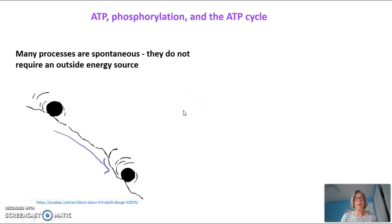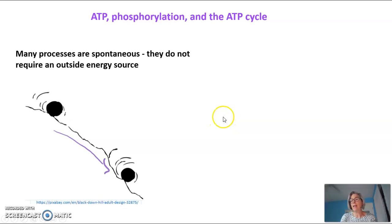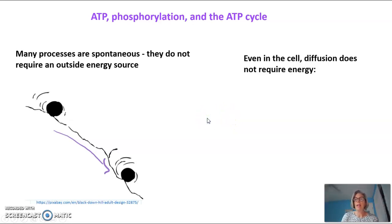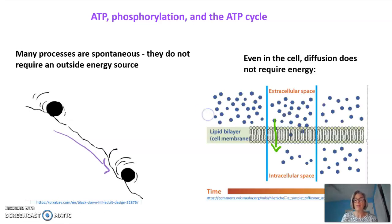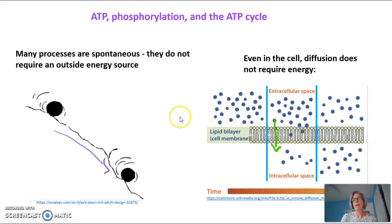So many processes are spontaneous — they don't require any outside energy, such as this ball rolling downhill. It'll do this without any added energy at all. Even in the cell, there are processes that don't require energy, such as diffusion. Diffusion is when molecules move from a high concentration to a low concentration, ultimately forming an equilibrium. This is driven by the concentration gradient and does not require any added energy.